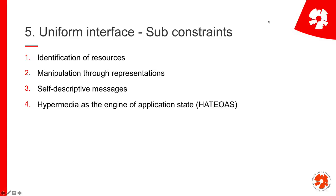The Uniform Interface constraint has four sub-constraints. The first is about how we identify resources — what's the naming scheme. The second is manipulation through representations. The third is self-descriptive messages. And the fourth is the rather horrible acronym HATEOAS — Hypermedia As The Engine Of Application State — which is a tricky one to understand.